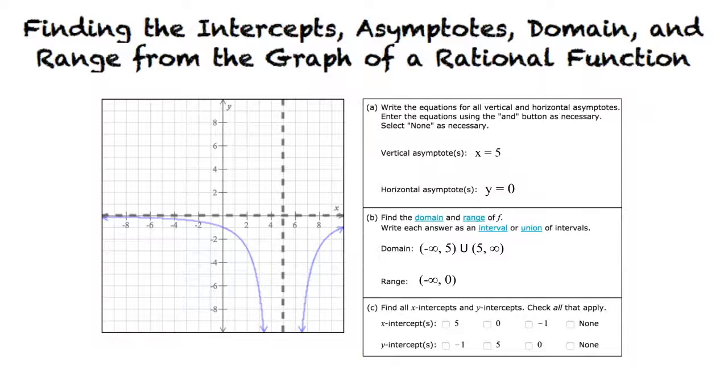Let's move on to part C. Part C is asking us to identify the x and y-intercepts. Remember an intercept is where the graph crosses the axis. Let's start by looking at the x-intercept. Do you see anywhere where the graph crosses the x-axis? It looks like it gets really close to the x-axis, but I don't think it crosses the x-axis anywhere. Does this mean there is no x-intercept?